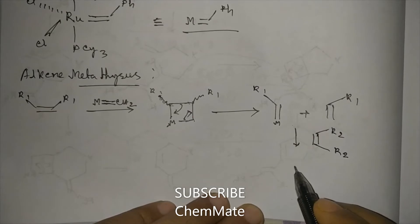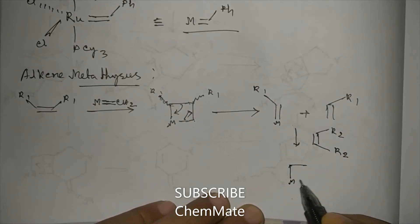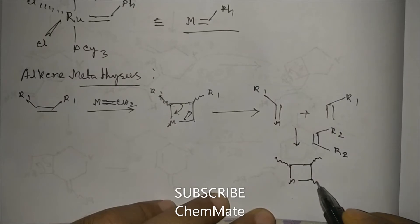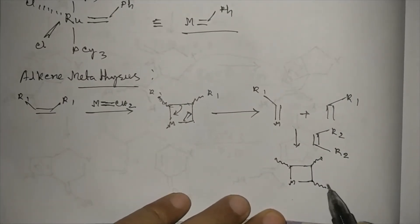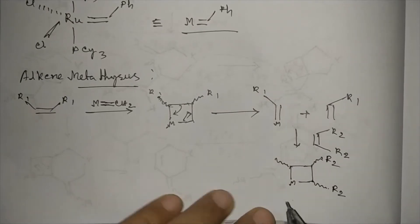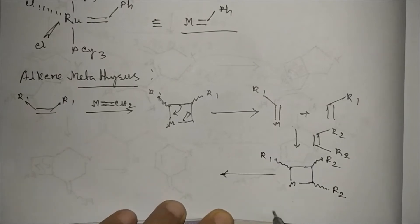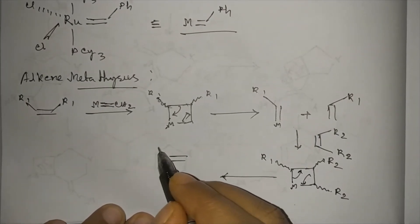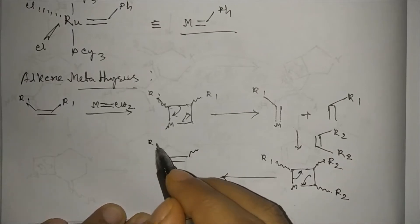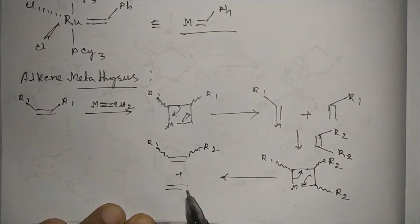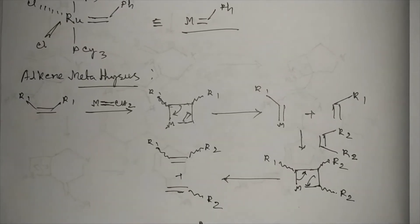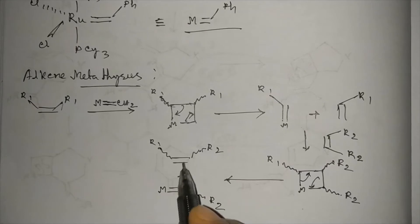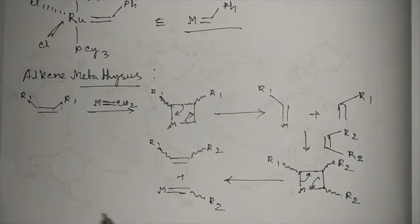This R2 group alkene will again form a cycloaddition intermediate. Cycloaddition will take place and this intermediate will be formed, then cycloelimination will take place to form the product. The product is formed, plus the catalyst is regenerated. This catalyst will again be involved with another alkene to form a cross product. In this way, the reaction will take place.